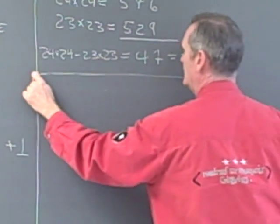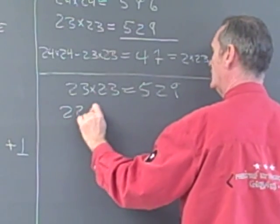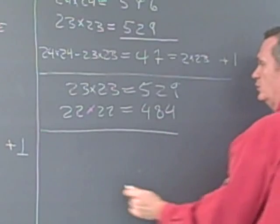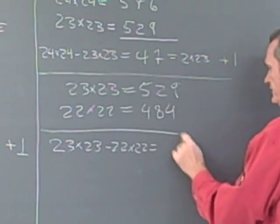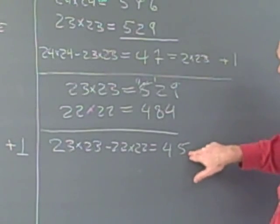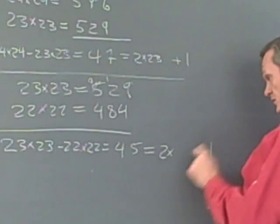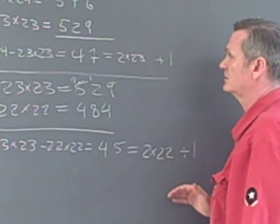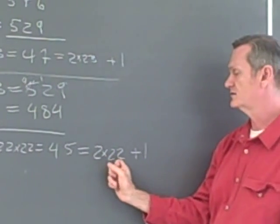Let's continue. 23 times 23 is 529, and 22 times 22 is equal to 484. When we subtract, 23 times 23 minus 22 times 22 equals 45. So we have 45, 47, and the number before was 49. And 45 is one more than two times 22, which is one more than 44. This pattern always continues: the difference of consecutive squares is an odd number, and that odd number is one more than twice the smaller number.